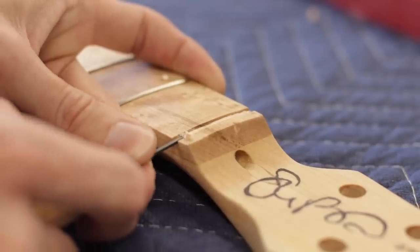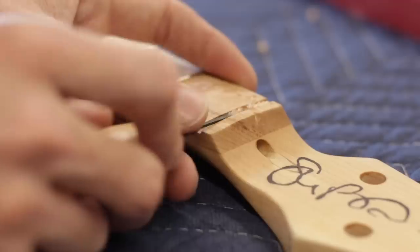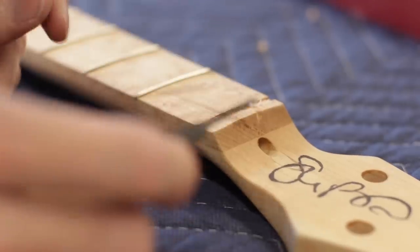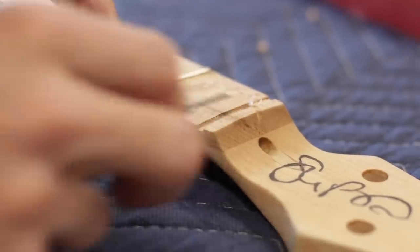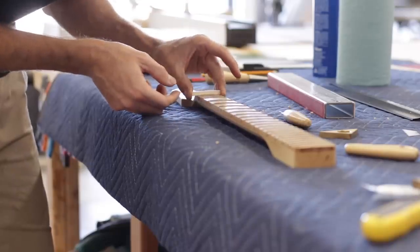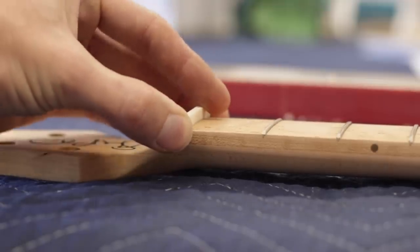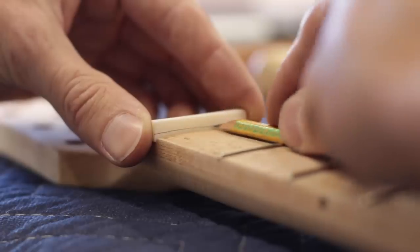And the final thing to do with the neck before getting everything put together is to install the nut. The nut slot needs to be cut to the exact width of your nut material, and it also needs to be cut flat across the fretboard instead of following the radius. I just used a couple small chisels to cut out the recess, then set the nut in place. By taking a pencil that's been cut in half, I can mark a line that's even with the height of my first fret.